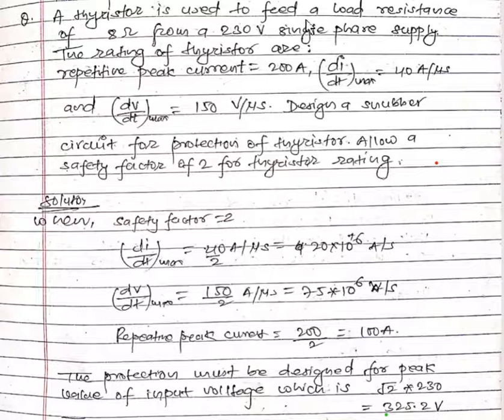A thyristor is used to feed a load resistance of 8 ohm from a 220 volt single phase supply. The rating of thyristor are given as repetitive peak current is 200 ampere, and dI/dt max is 40 ampere per microsecond.